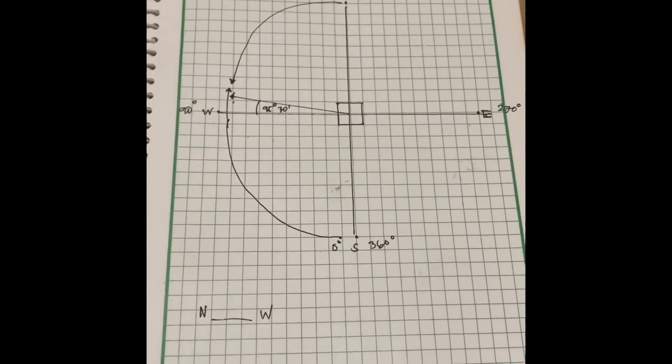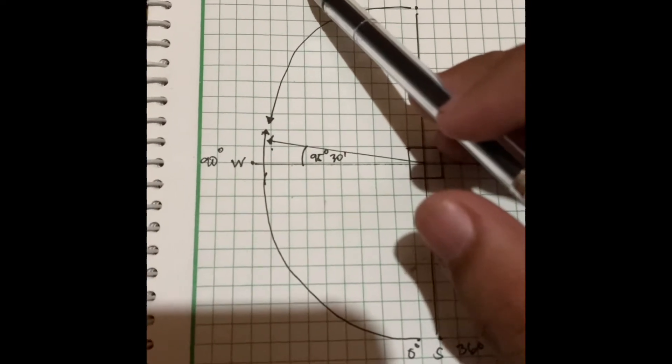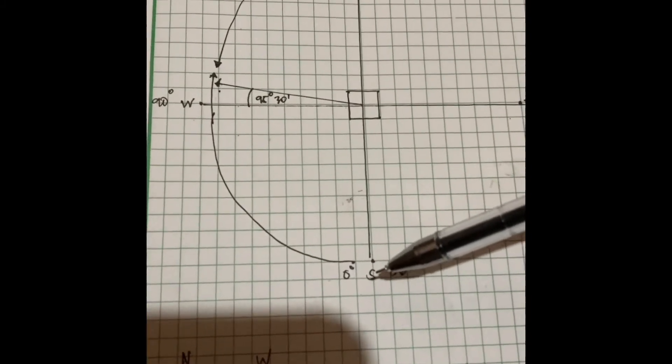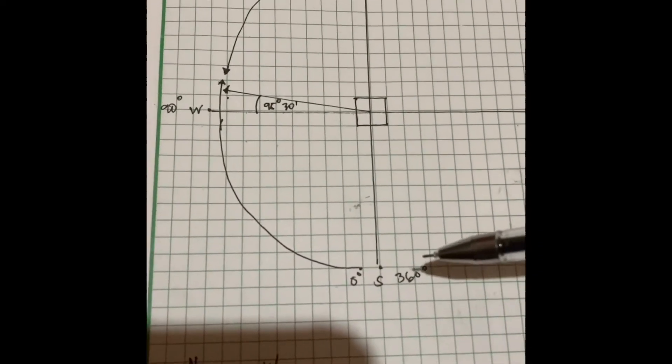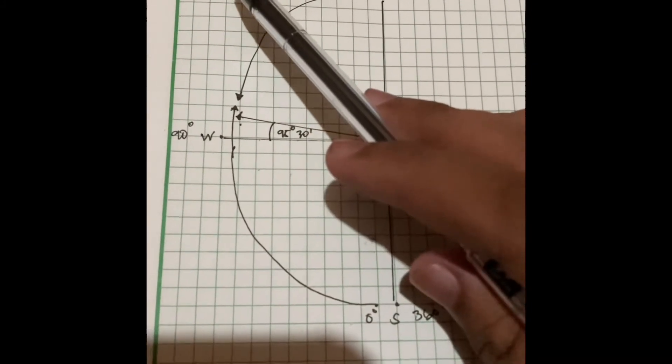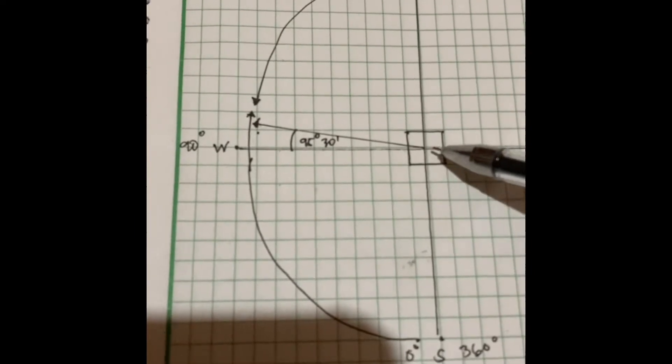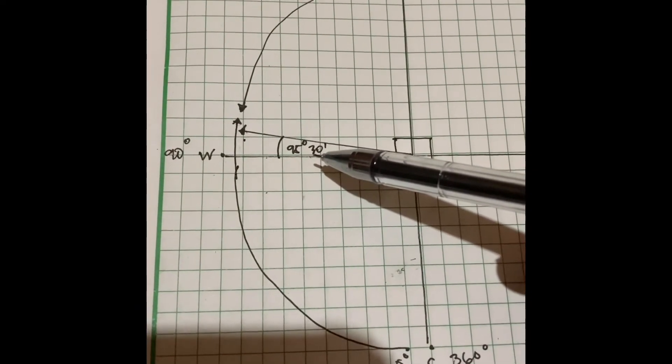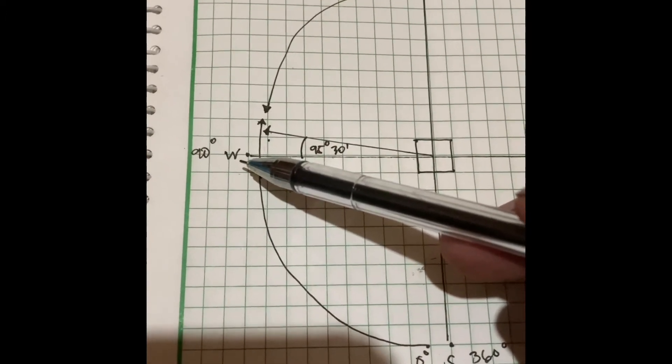For number 2, the given azimuth is 95 degrees and 30 minutes. This is measured counterclockwise from 0 degrees. The location is from north to west.